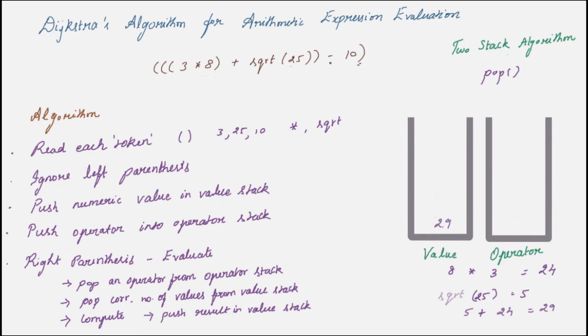Now the next entry is an operator. Push that into the operator stack. Then you have a number. Push it into the value stack. Finally you have a right parenthesis. So perform an evaluation. Pop an operator. Since it is a subtraction you have to pop two numbers. The result is 19. Push it into the value stack. Whatever is left in the value stack will be your final result.